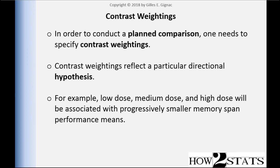To give a brief example — and this will really come together once you see the examples applied with software — the example I give here is low dose versus medium dose and high dose, say three levels of alcohol, and you're measuring memory span performance. You would expect memory span to be incrementally affected more adversely as dosage increases. That's a directional hypothesis: the higher the alcohol dose, the worse your performance on a memory span test. You can specify contrast weightings to reflect that direction of a hypothesis.